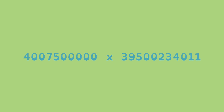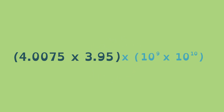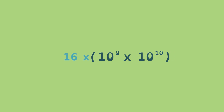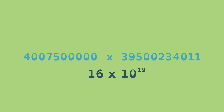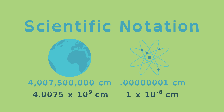Multiplying these numbers is a lot easier if you use scientific notation. First, you multiply the numbers separately. Let's round 4 and 75 thousandths and 3 and 95 hundredths to 4. The product of 4 times 4 is 16. Next, you multiply the powers. We know when powers are multiplied, exponents are added. Here we get 10 to the power of 19. The product of these two numbers is very close to 16 times 10 to the power of 19. As you can see, scientific notation makes it much easier to do math with extreme numbers.